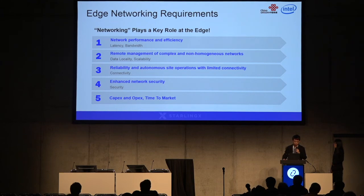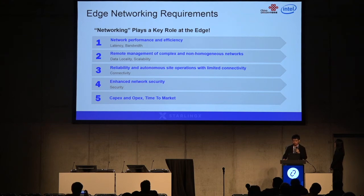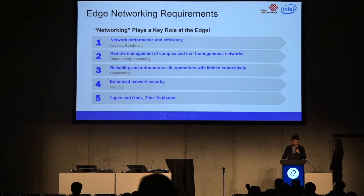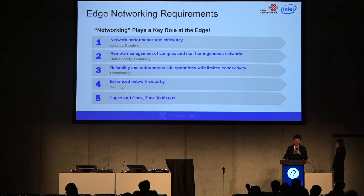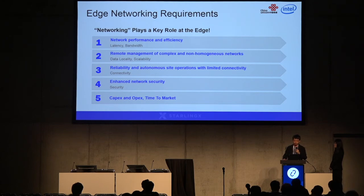Why are we talking about edge networking? Because the computing driving factors have quite a lot in common with networking requirements. For example, latency and bandwidth require a more performant and efficient network. We also need remote management of complex non-homogeneous networks for data locality and scalability. For connectivity, we need reliability and autonomous side operations with limited connectivity, as well as enhanced network security CapEx and time-to-market not only for edge computing but also for edge networking. Networking plays the key role at the edge, so if we want our edge infrastructure to land in real life we need to fill those gaps in edge networking.